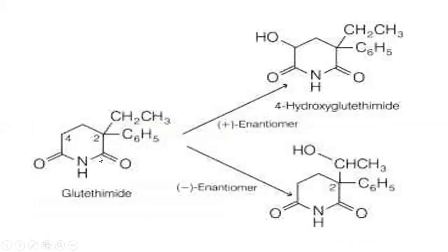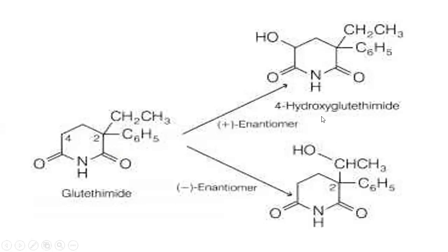Similarly, glutethimide can exist as the dextro or levo enantiomer. Both undergo oxidation, but the dextro enantiomer undergoes hydroxylation at the fourth position to form 4-hydroxyglutethimide, whereas the levo enantiomer undergoes metabolism at the ethyl substituent, with hydroxylation taking place on the ethyl group. This demonstrates variation in drug metabolism between different enantiomers.